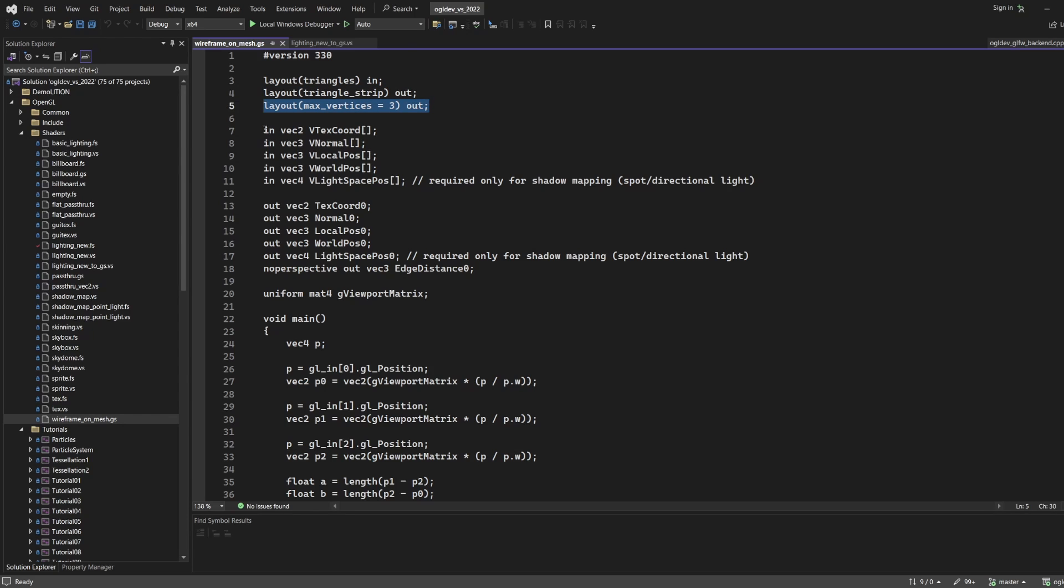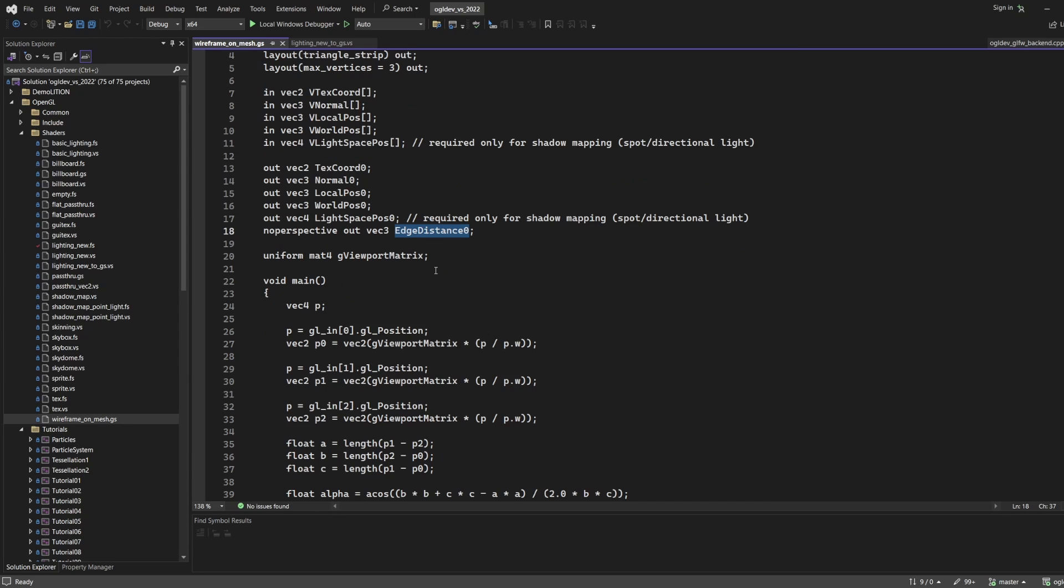Next we have a set of input and output attributes. All the input attributes will be copied as is to the output - texture coordinates, normal, whatever. We do need an additional output attribute called edge distance which will be calculated in this shader. This is a vec3 and each component will contain the minimum distance from the corresponding vertex to the opposing edge.